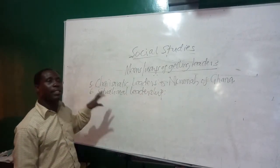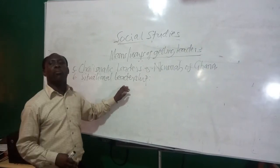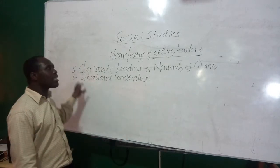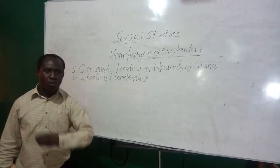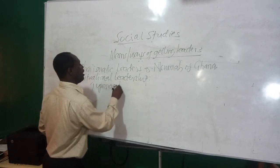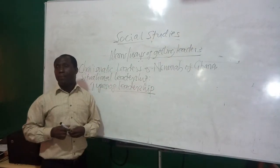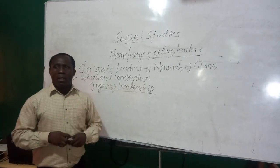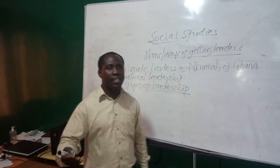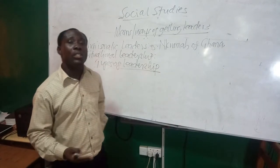There is also situational leadership: a situation may happen and during that circumstance, somebody may be appointed or selected to lead the group. There are several ways of getting leaders, and these are the ones you need to know. Basically, there are four types of leadership, and leadership styles are based on how leaders influence their subordinates in order to achieve the aims and aspirations of the group.